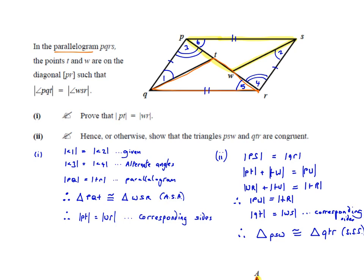It's not just good enough to think about it in your head — you need to put all this information down on the page. We start with the first equal thing: angle 1 is equal to angle 2. Why? Because it was given in the question. The ellipsis here means 'because.' This is very important — some people think it isn't, but you must show the reason why you're making each statement.